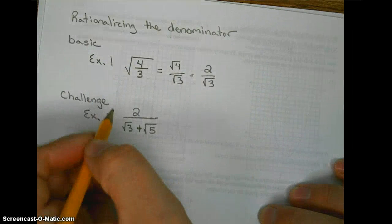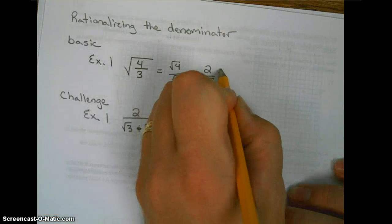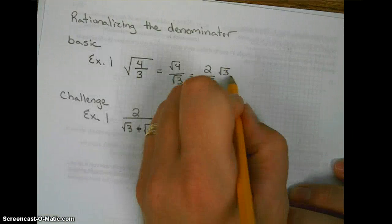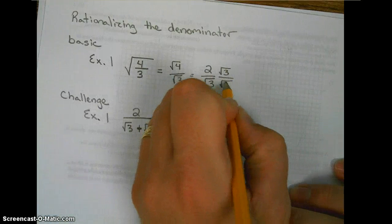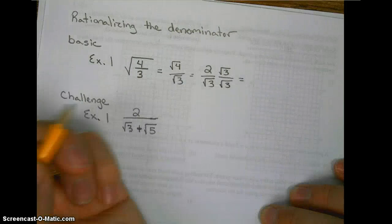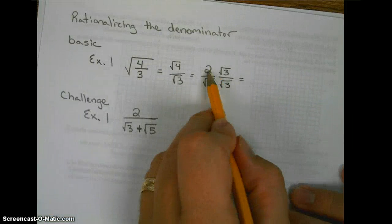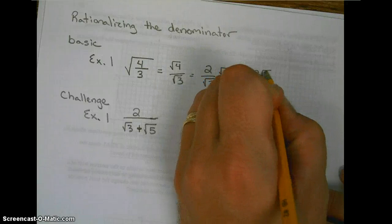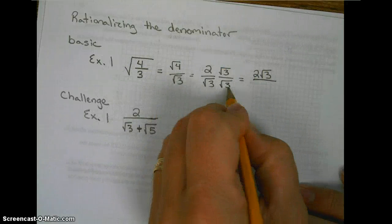To rationalize the denominator, you multiply the fraction by the denominator on the top and on the bottom. By doing this, 2 times the square root of 3 goes on the top, the square root of 3 times the square root of 3 is the square root of 9.